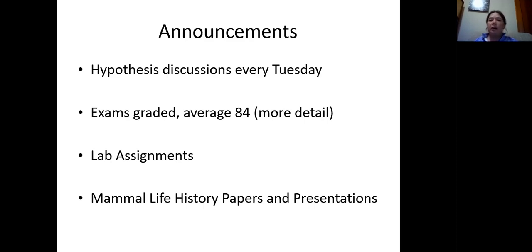I did send out a message with the two remaining lab assignments. We are doing some zoo observations and also you're going to be creating a dichotomous key for either bats or shrews. That dichotomous key can be a little tricky, so if you have questions make sure you contact me. And don't forget that you have to do your mammal life history papers and presentations.